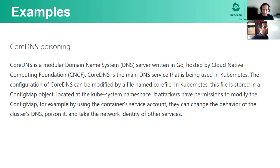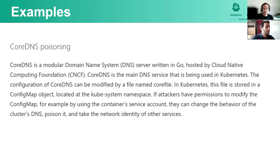Another example is CoreDNS poisoning. The technique talks about poisoning the cluster's DNS — not by traditional DNS poisoning techniques, but by modifying the Corefile, which is the configuration file of CoreDNS. This configuration is stored as a ConfigMap in Kubernetes in the cluster. So if attackers have access to this ConfigMap, they can poison the DNS in the cluster. This is not a traditional DNS poisoning that affects any service — it is a unique threat that targets Kubernetes specifically.